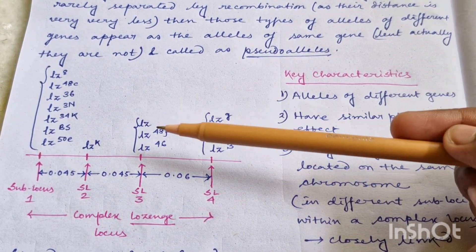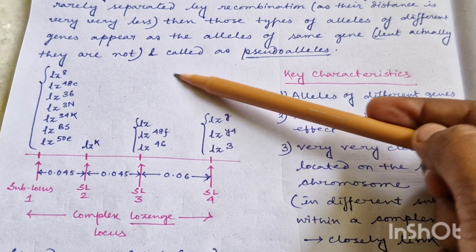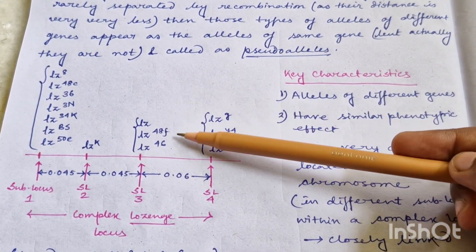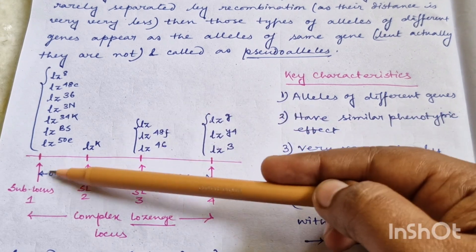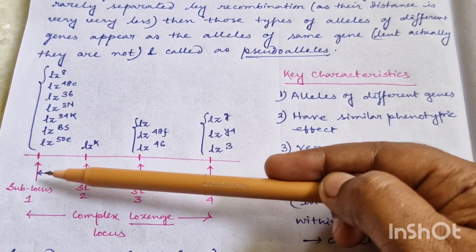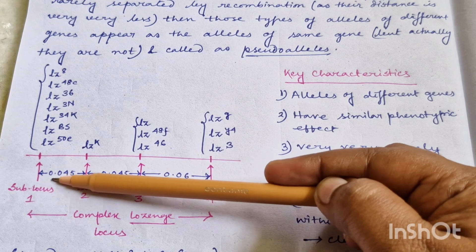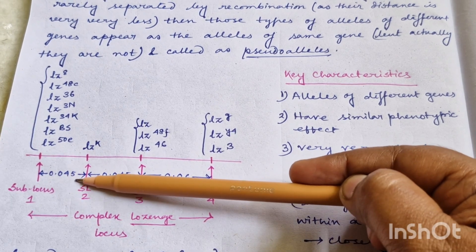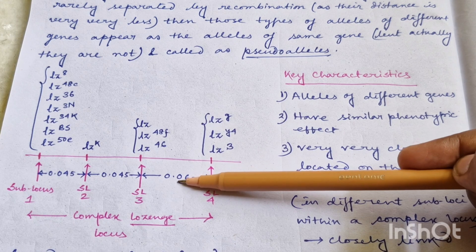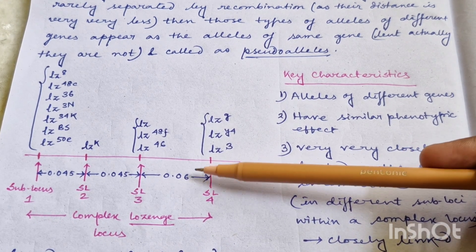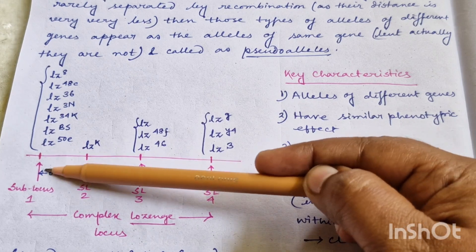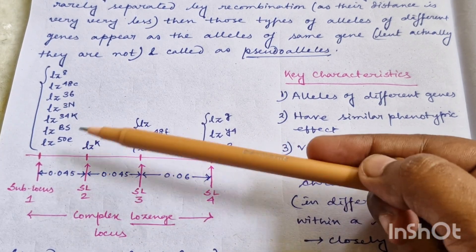The important thing to remember is that all of these alleles affect the same phenotype — all of them show the same phenotype. And they are very, very closely located. The recombination distance between sublocus one and sublocus two is only 0.045, here also only 0.045, and here also only 0.06. That means they are very, very closely located, so recombination between these subloci is nearly zero.